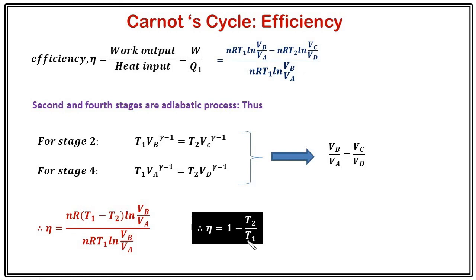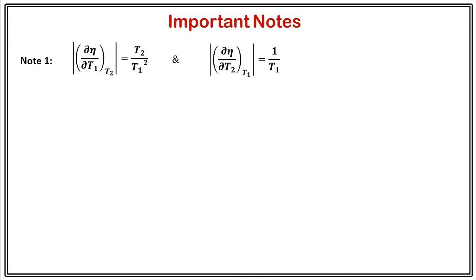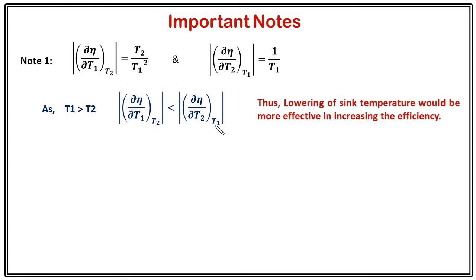This is the final expression for the efficiency of a Carnot engine. From here we can take some important notes. Suppose you want to increase the efficiency of your Carnot engine — should you increase the temperature of the hot reservoir or decrease the temperature of the cold reservoir? Taking the derivative of Eta with respect to T1 gives T2/T1² and the rate of change of Eta with respect to T2 is 1/T1. Since T1 is greater than T2, the rate of change with respect to T1 is less than with respect to T2. Thus, lowering the sink temperature would be more effective in increasing the efficiency.